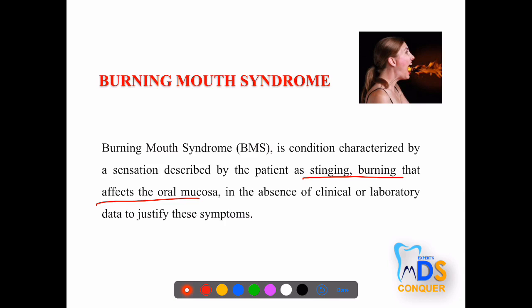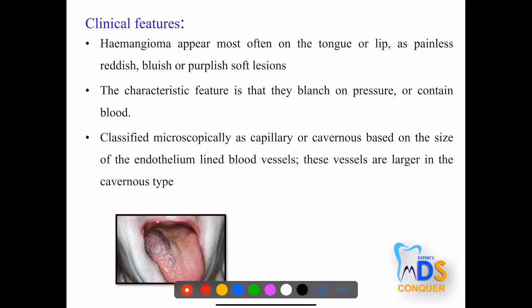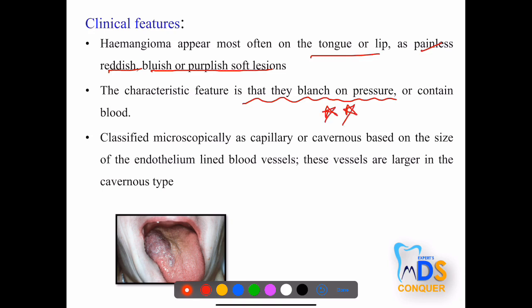Vascular lesions include hemangiomas and vascular malformations, which are developmental anomalies of blood vessels. Congenital hemangioma occurs in childhood and infancy due to proliferation of endothelial cells. Clinically, hemangiomas are most often seen on the tongue as reddish, bluish, or purplish soft lesions, usually painless. The characteristic feature is blanching on pressure. Microscopically, capillary or cavernous endothelium-lined blood vessels are seen.